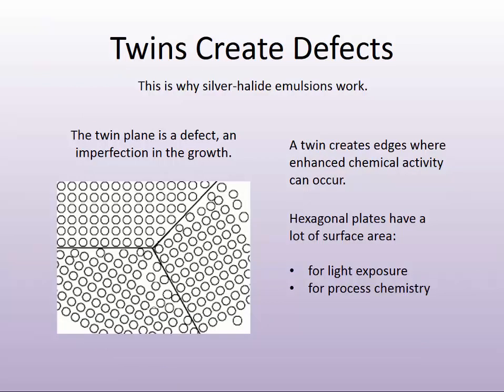This formation of twin plates is the introduction of what is most critical about silver halide grains — the reason why they work. In solid-state chemistry, the reason why silver halide works is because they're defective; they actually have defects. And a twin creates a defect — it creates sites or edges which enhance chemical activity.